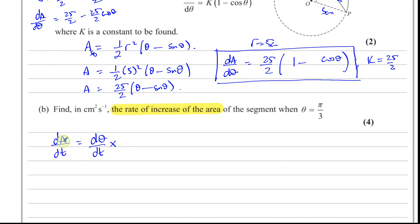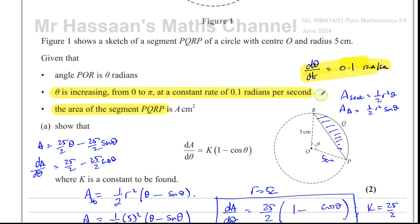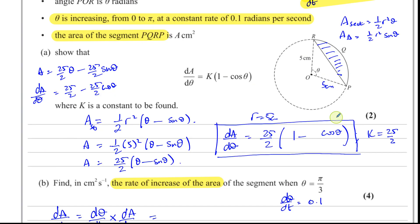We want to end up with dA/dt. If we multiply dθ/dt by dA/dθ, we will end up with dA/dt. And we have dA/dθ. We had to find that in part A. So dθ/dt, as we know from what's given in the question, is 0.1 radians per second. Theta is increasing at the constant rate of 0.1 radians per second. So dθ/dt is 0.1. We know that.